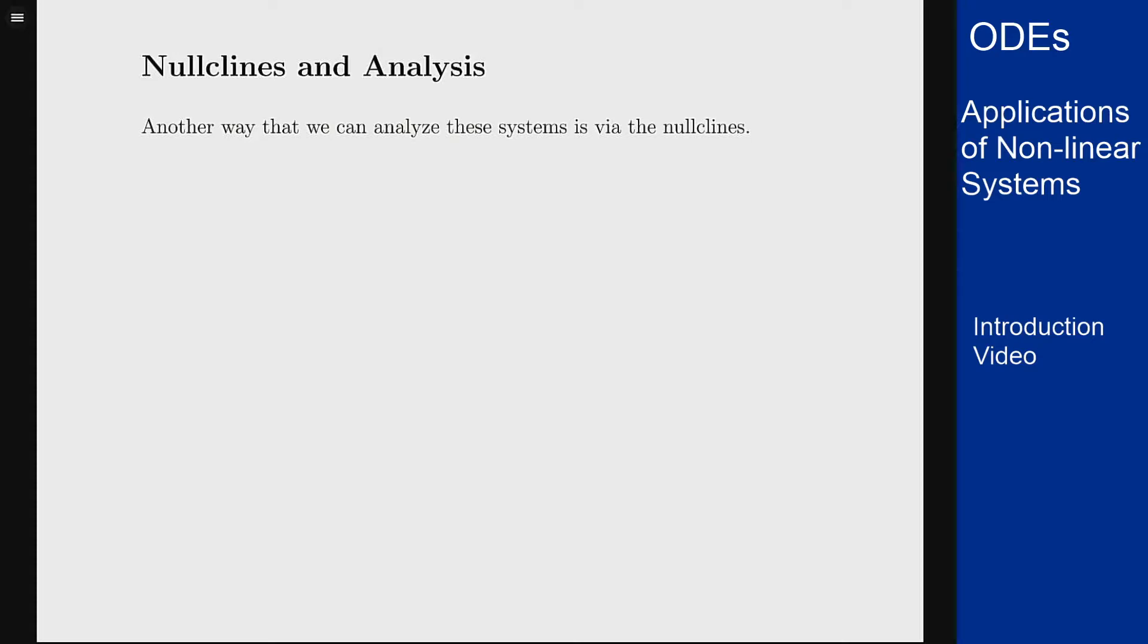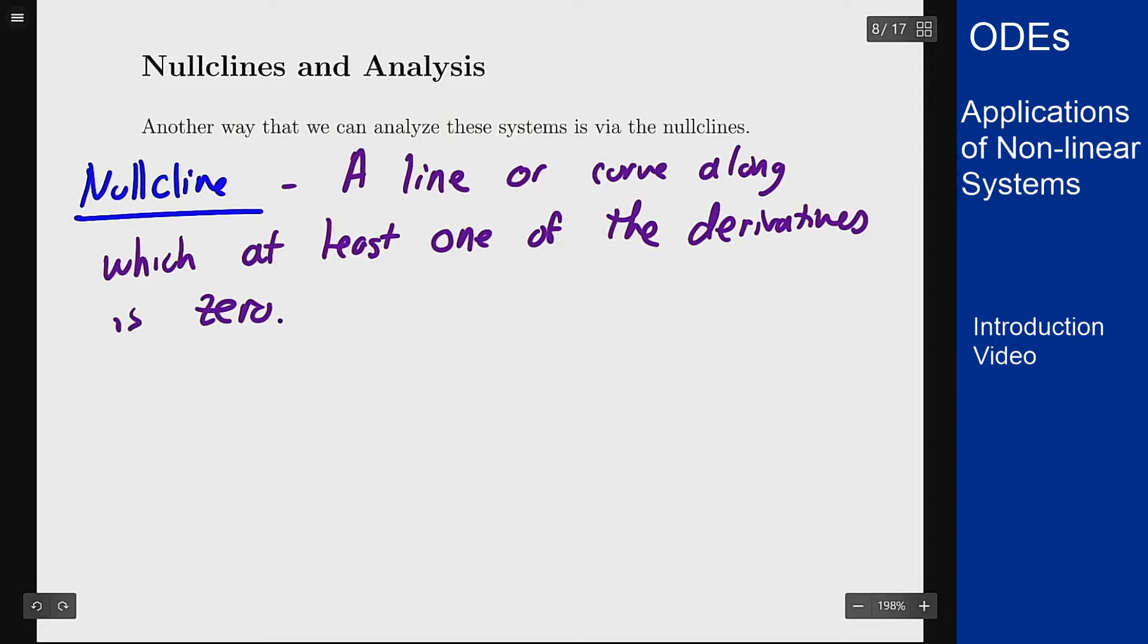And first off what is a nullcline? Well a nullcline is a line or curve along which at least one derivative in the system is zero. So I don't need every part of the system to be zero, just one part.